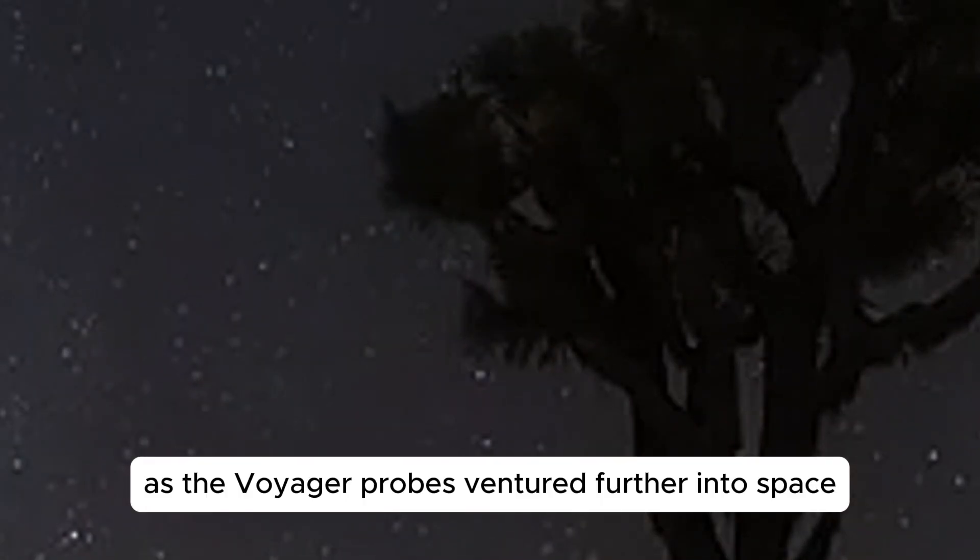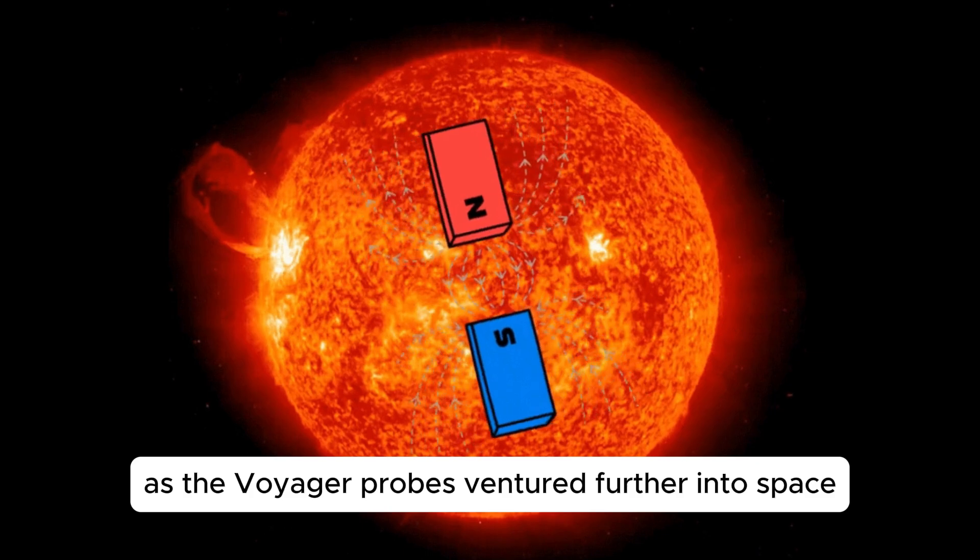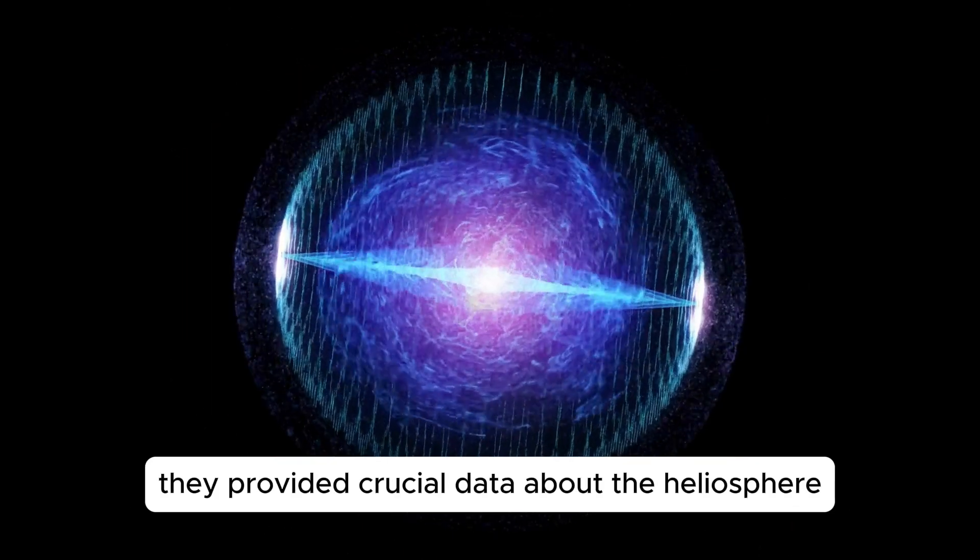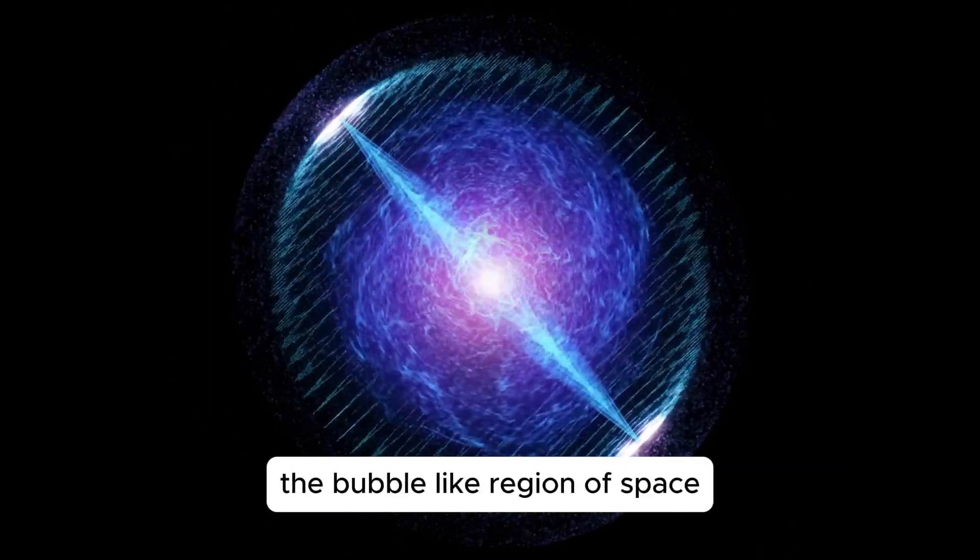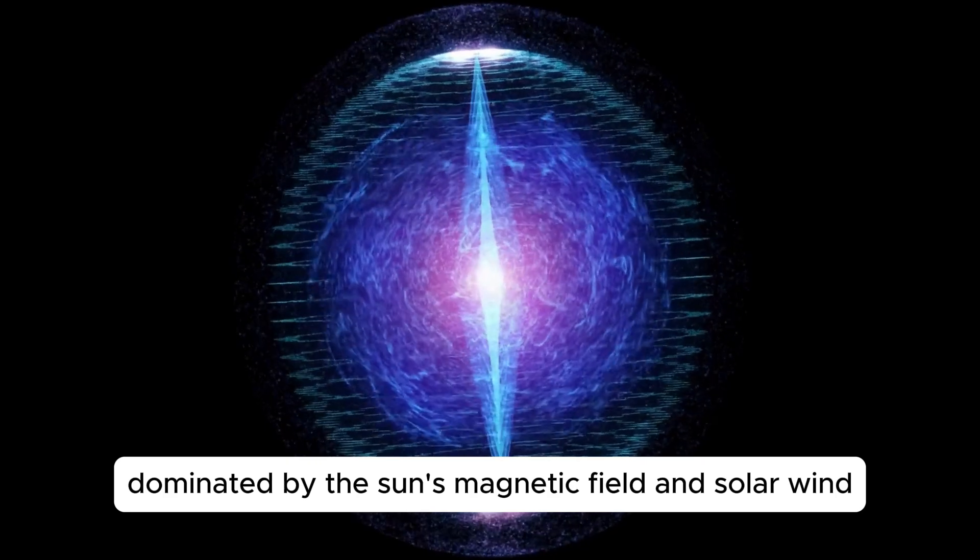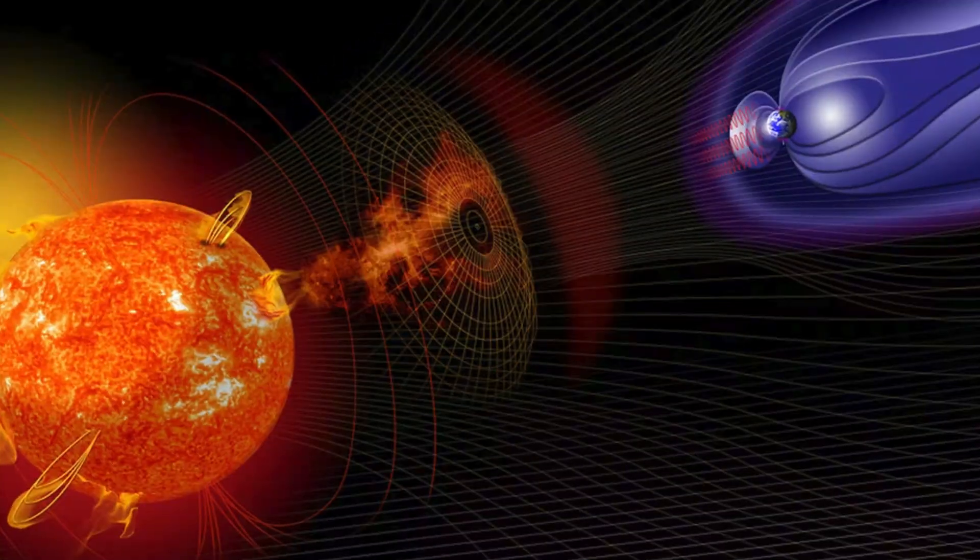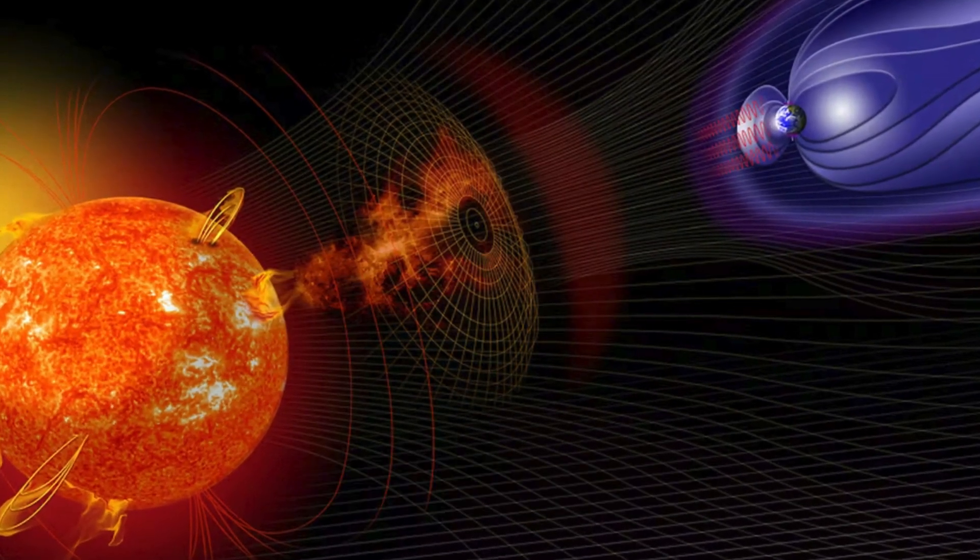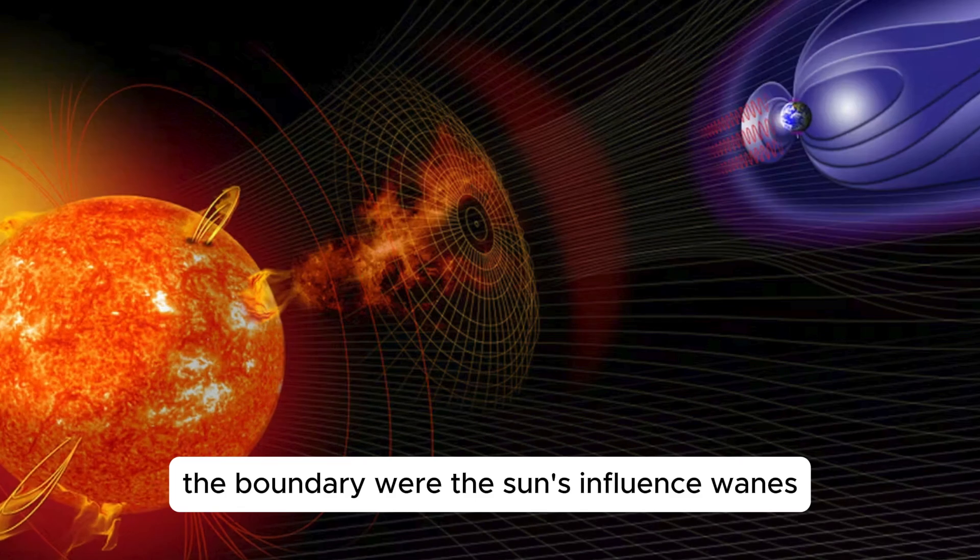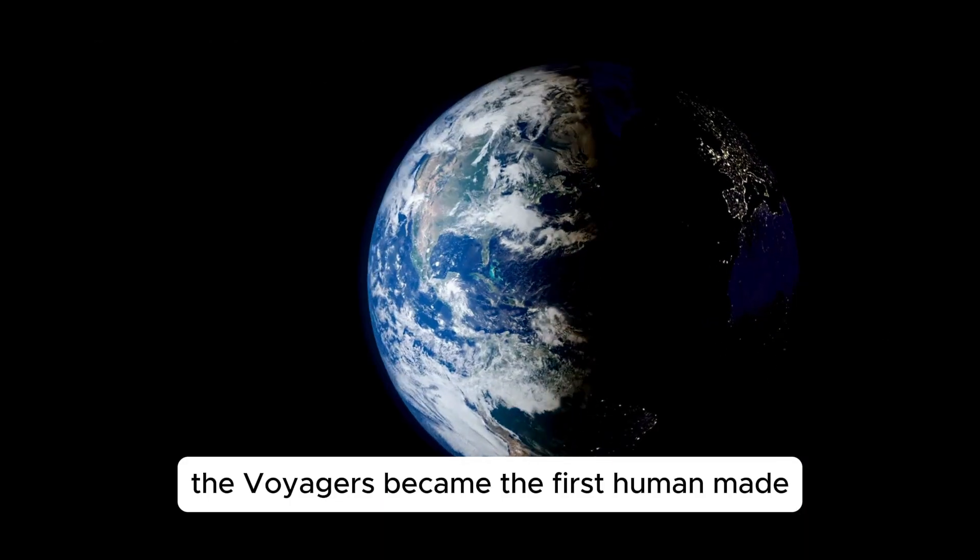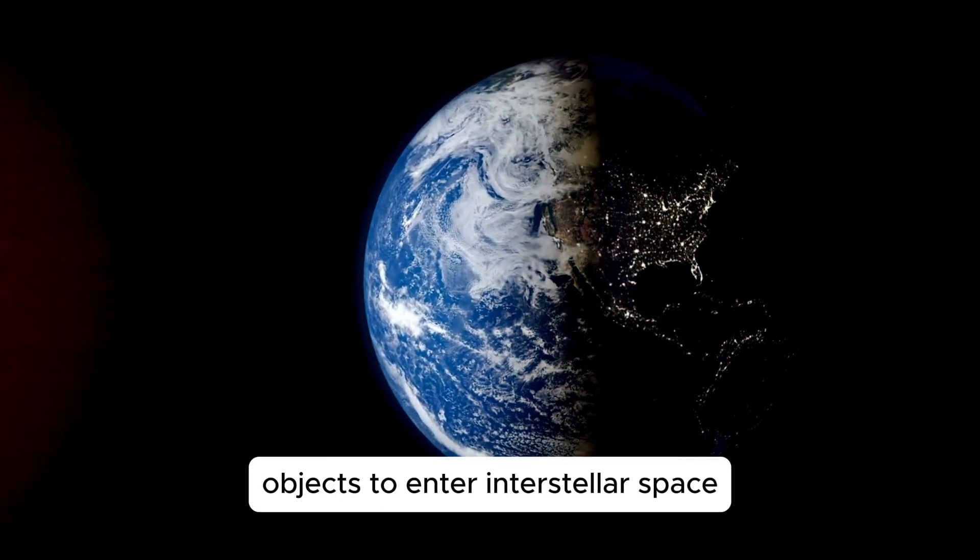As the Voyager probes ventured further into space, they provided crucial data about the heliosphere, the bubble-like region of space dominated by the Sun's magnetic field and solar wind. After crossing the heliopause, the boundary where the Sun's influence wanes, the Voyagers became the first human-made objects to enter interstellar space.